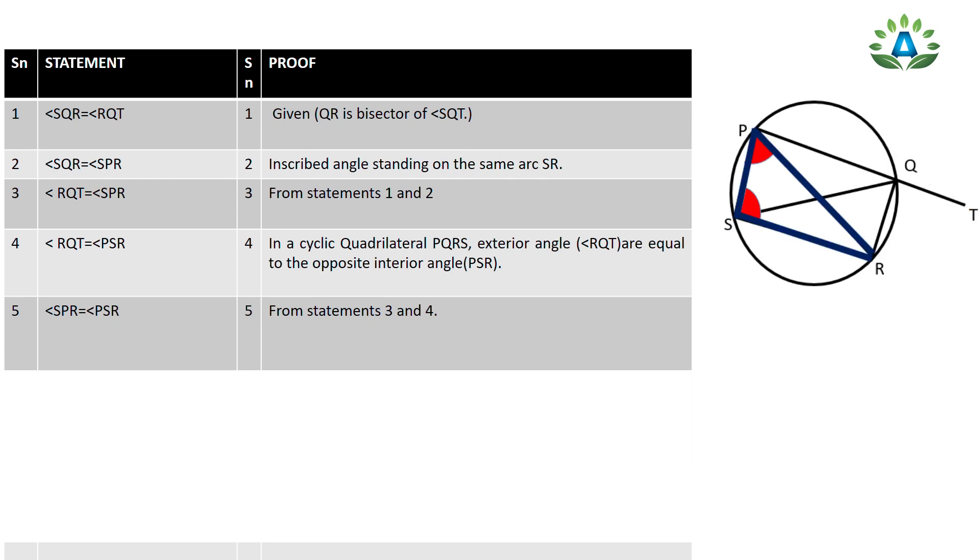Therefore, angle SPR equals angle PSR. In triangle PSR, the base angles are equal. This means triangle PSR is an isosceles triangle.